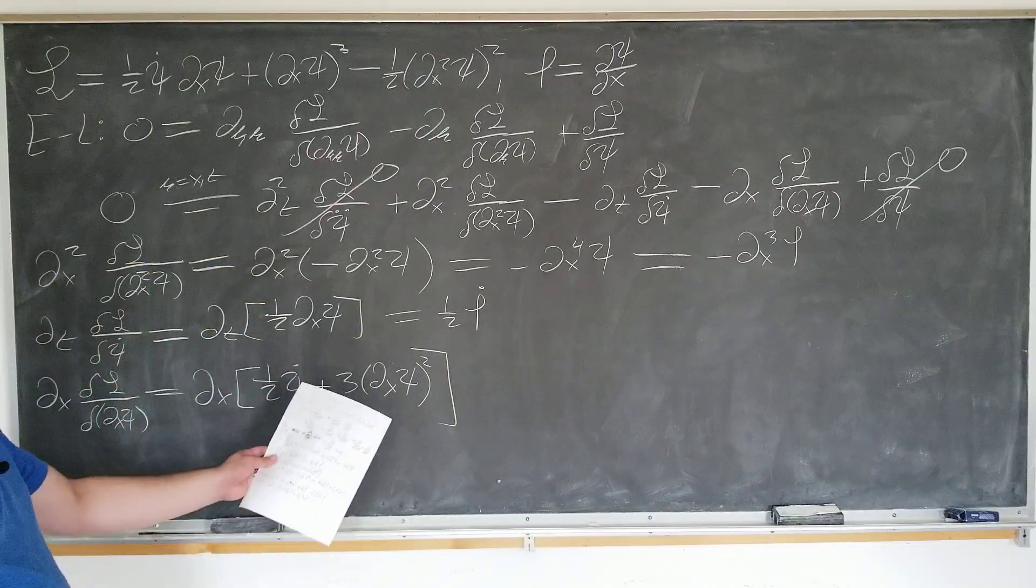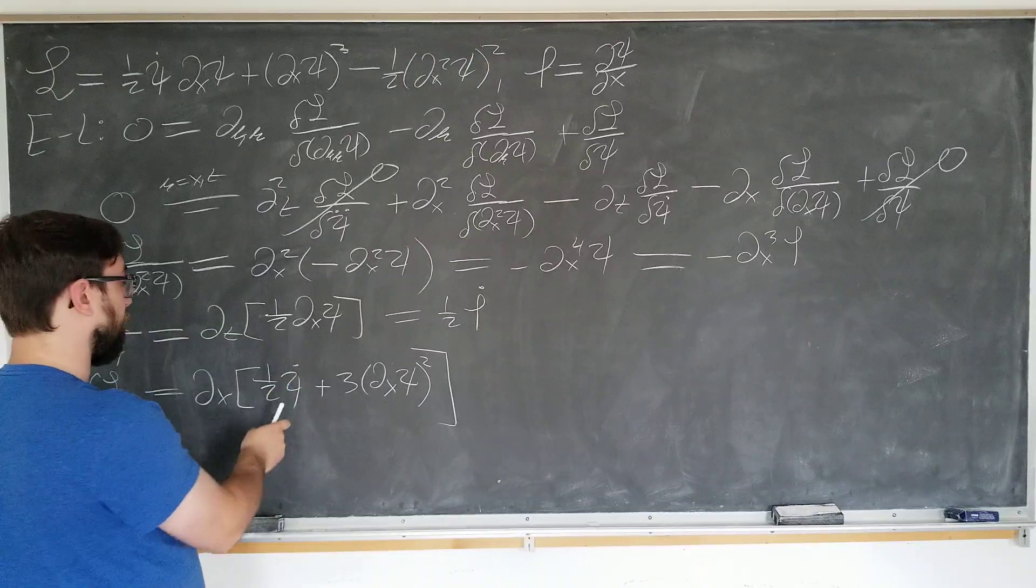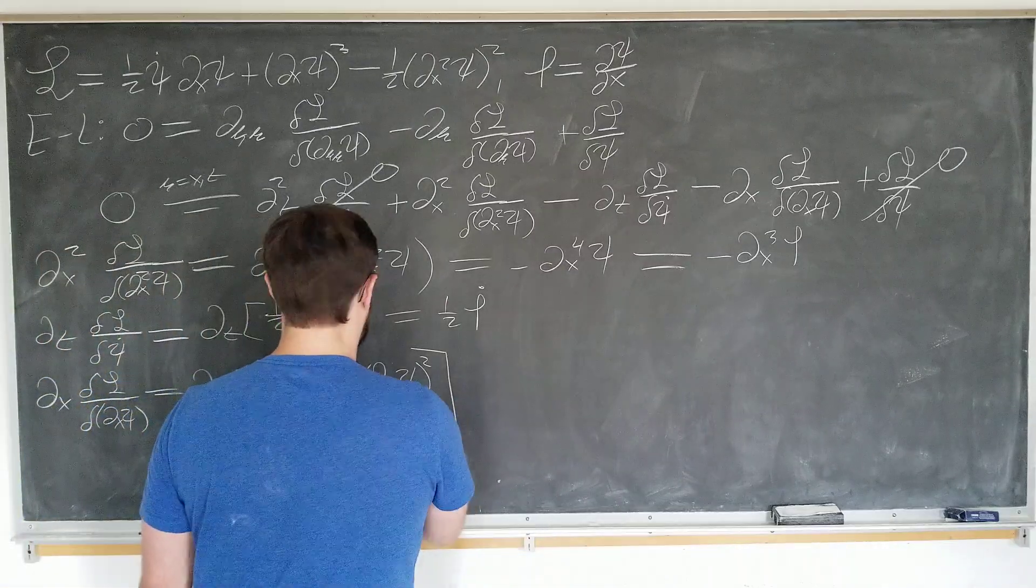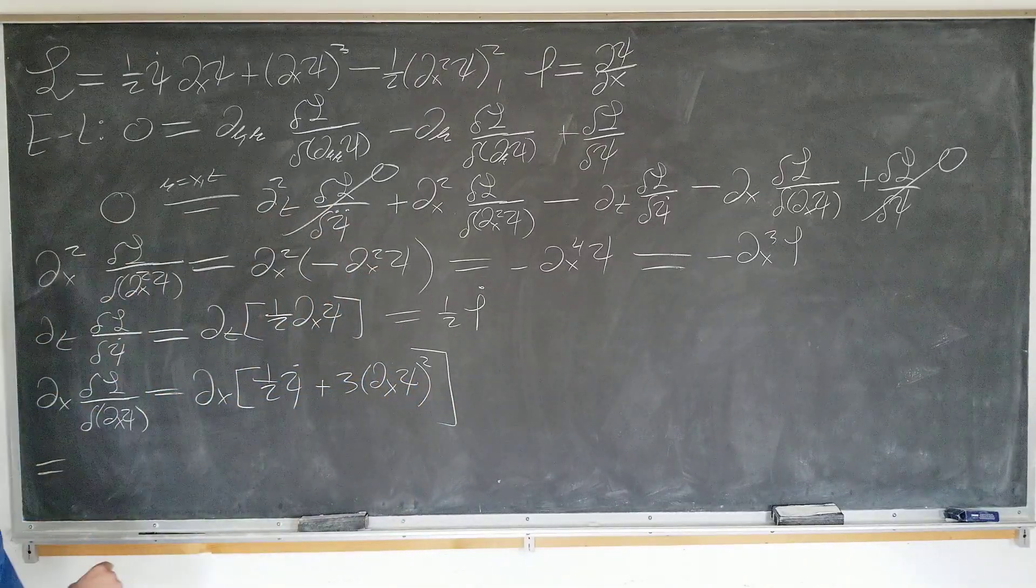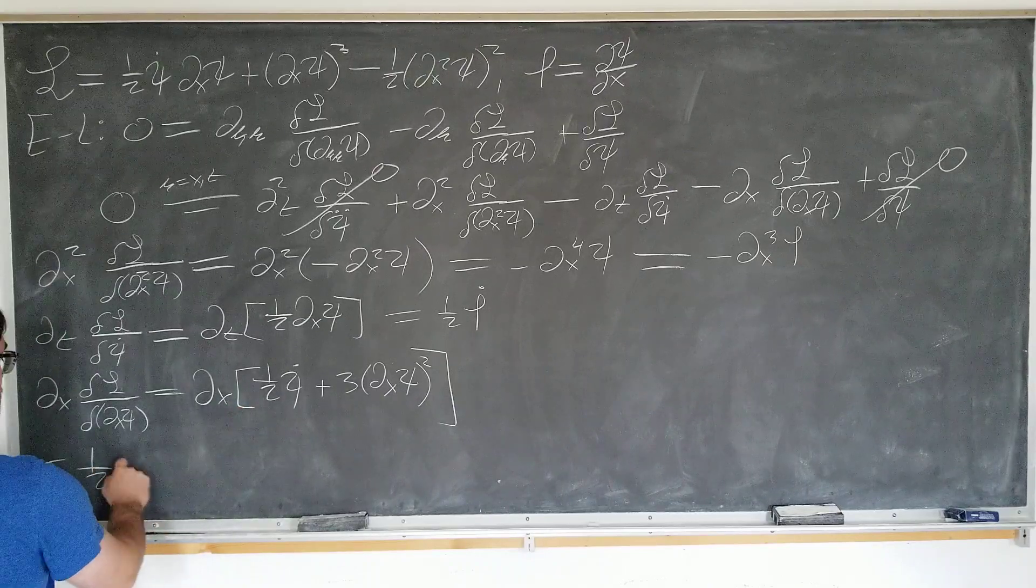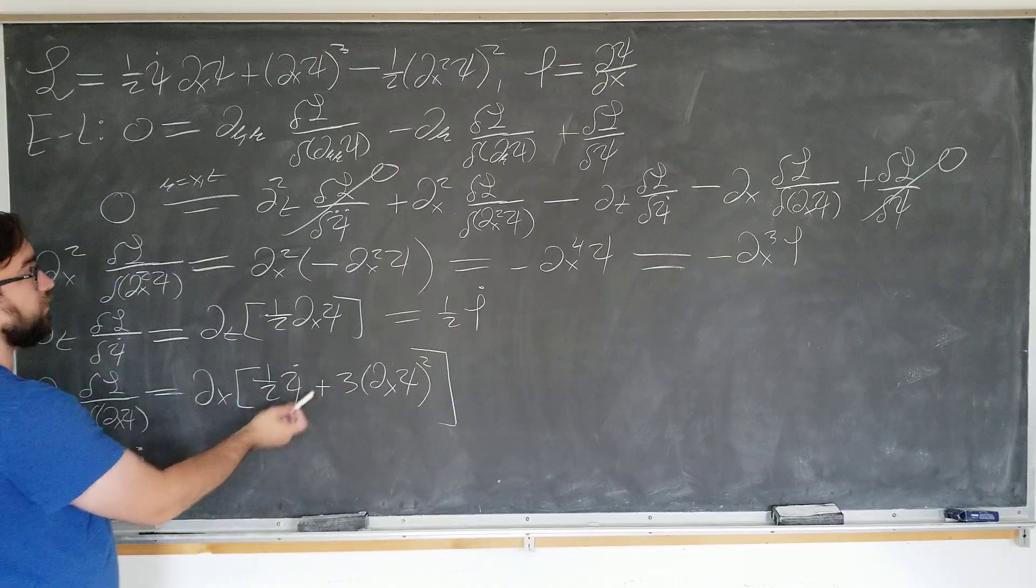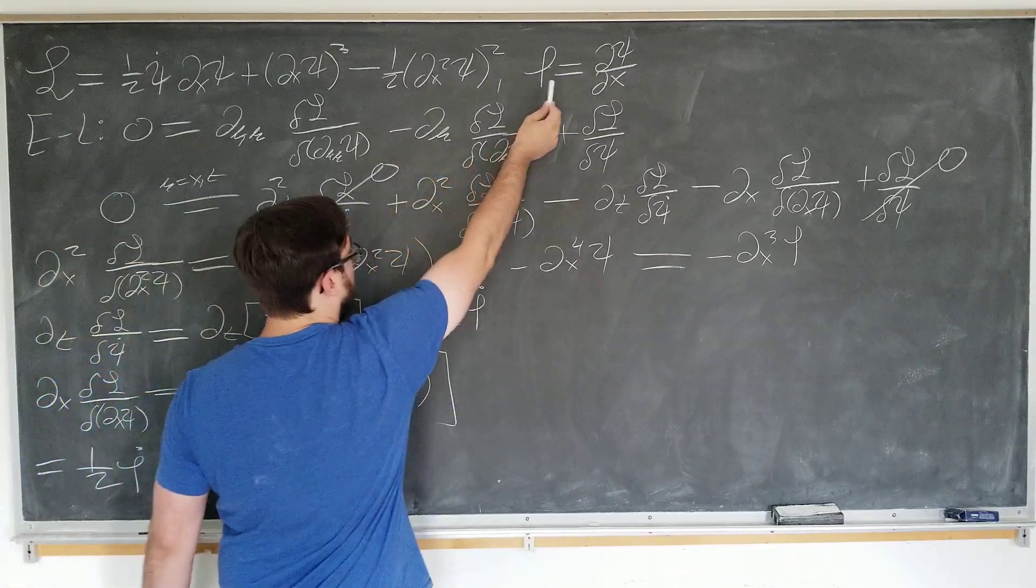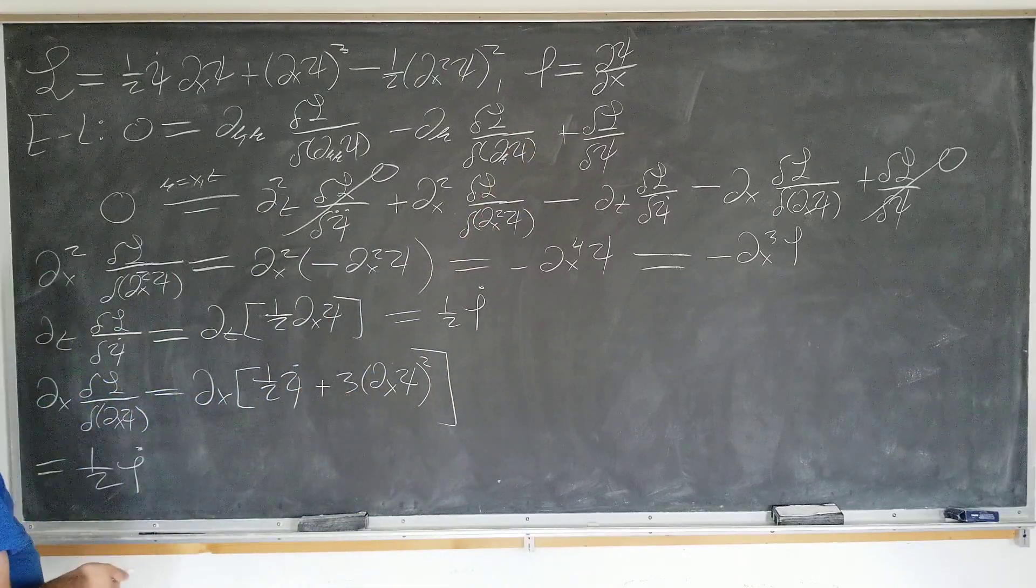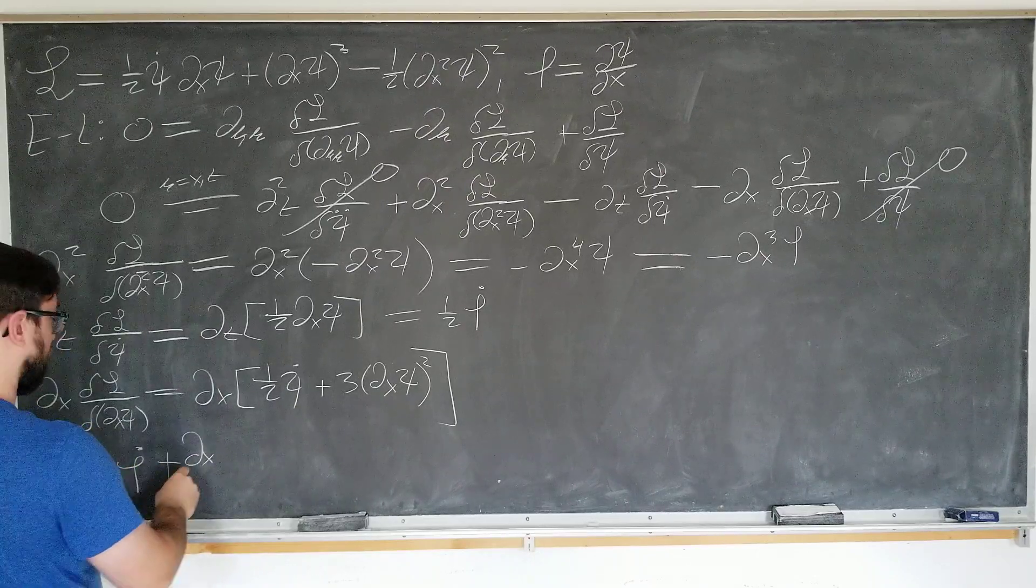Okay. Now we're going to use the relation again. Time and space derivatives commute. So we'll take the time derivative out, put in the space for that term. It's just going to be one-half phi dot. See what I did? I took the time derivative out, space derivative in. Use this relation here. Okay. Next term, it's a bit trickier.